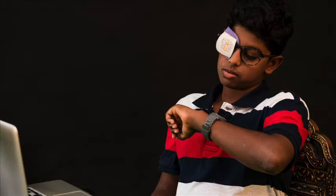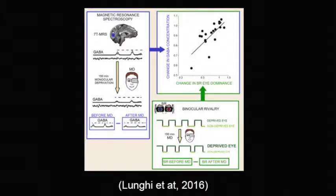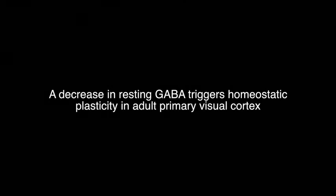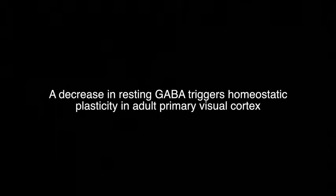They measured binocular rivalry in normal settings and again after patching one eye for two and a half hours. The results showed that the patched eye was more dominant than the other. The concentration of a neurotransmitter, gamma-aminobutyric acid — GABA for short — may trigger neuroplasticity. The research concluded that the change in resting GABA strongly correlates with deprived eye perceptual boost, and a decrease in resting GABA triggers homeostatic plasticity in adult primary visual cortex. This is a classic example of how researchers use binocular rivalry to prove some of the amazing abilities of the brain, such as neuroplasticity.